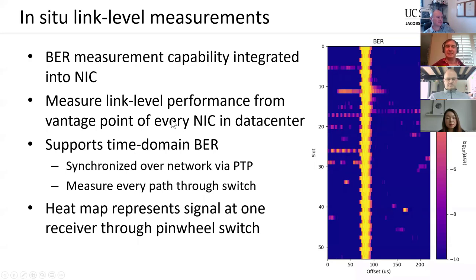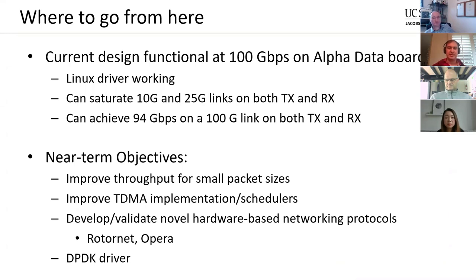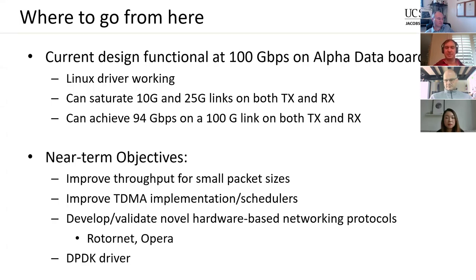We can also perform high-resolution bit error rate measurements in the NIC design, which allows us to characterize all optical paths through the switch. With this setup we synchronize all the NICs and the switch with PTP and perform error measurements through the switch to identify any internal defects and optimize the switch design. In summary: the NIC works, we can saturate 10G and 25G links, and hit about 94 Gbps on the 100G link. Near-term objectives include optimization for small packet sizes, improving TDMA performance, developing and validating hardware networking protocols, and writing a DPDK driver.